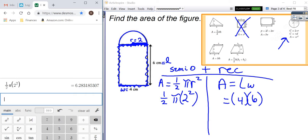Then I'm going to do my length times width. So it's four times six. And that gives me 24.